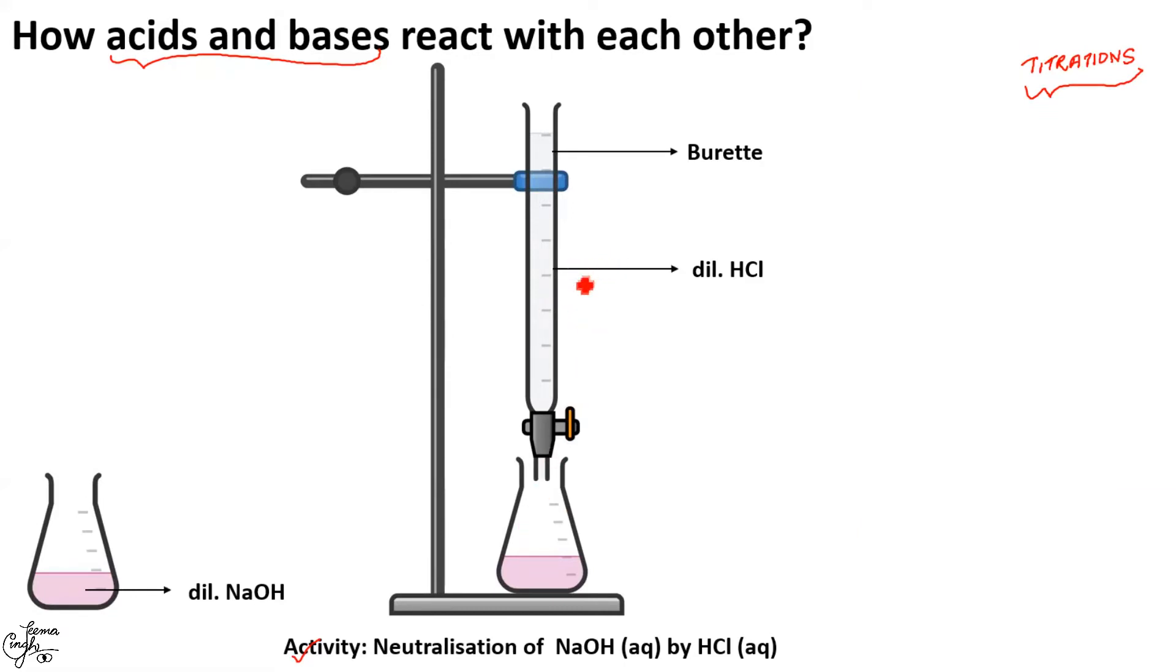Now, you're supposed to add acid drop by drop into the conical flask with constant swirling or stirring the content. You will observe that the pink color slowly lightens and ultimately disappears. You can see it has become colorless. You will stop adding any further acid as the reaction is just complete. The base that is sodium hydroxide has been neutralized by the acid and hence the color changed from pink to colorless.